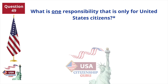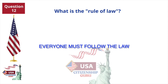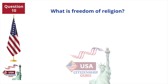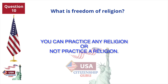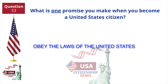What is one responsibility that is only for United States citizens? Serve on a jury. What is the rule of law? Everyone must follow the law. What is freedom of religion? You can practice any religion or not practice a religion. What is one promise you make when you become a United States citizen? Obey the laws of the United States.